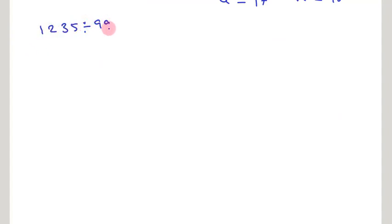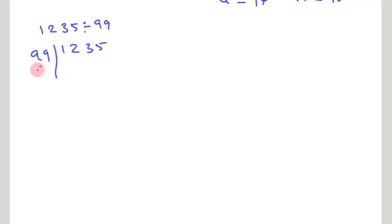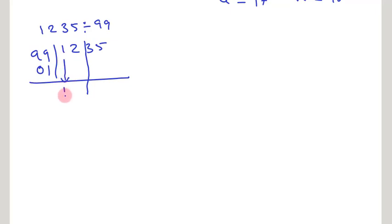The third problem is 1235 divided by 99. Firstly, we have to arrange the dividend and divisor in this manner. Write down the Nikhilam, that is 0, 1. And separate the dividend by taking a straight line after the 10s place. Then write down the leftmost digit, 1. The product of 1 and Nikhilam is 0, 1. Then add them — it is 2.